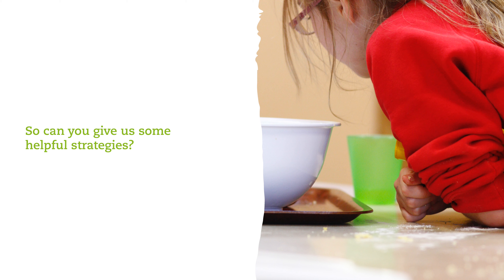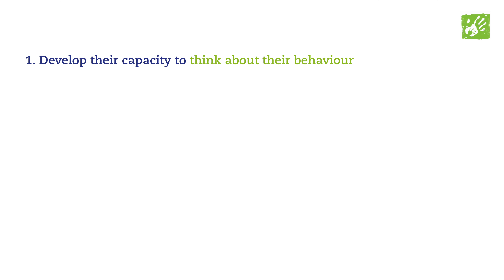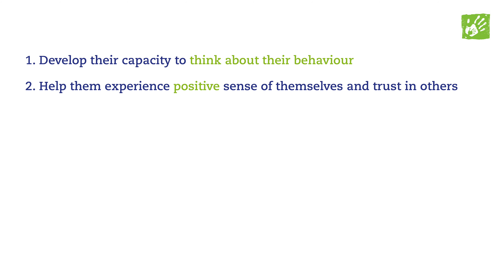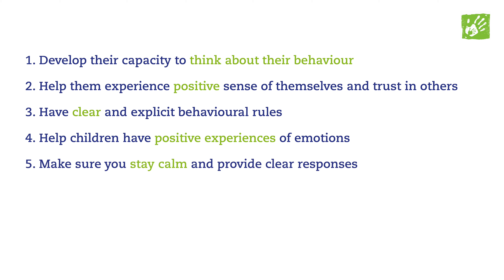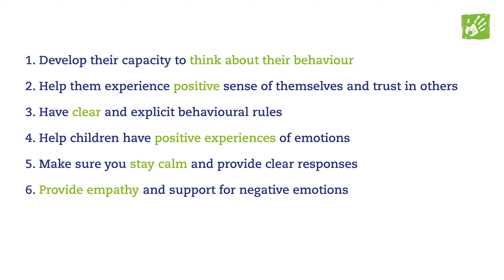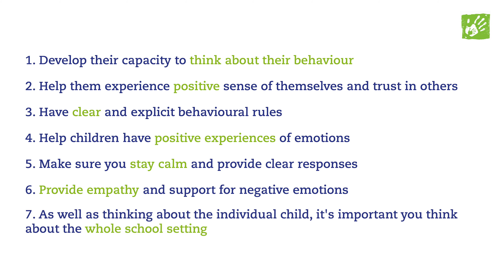So can you give us some helpful strategies? Try to help the child by developing their capacity to think about their behaviour and how others behave. Help them experience a positive sense of themselves and learn that they can trust in others. Have clear and explicit behavioural rules. Have a culture of empathy. Help children have positive experiences of emotions and to understand and manage these, even the more negative ones. Make sure as staff you stay calm and provide clear responses. Provide empathy and support for negative emotions — don't just be punitive. Show that you understand their reasons for negative emotions and find ways to help them manage these. As well as thinking about the individual child, it's also important to think about the whole school setting, which can provide the foundation for children feeling that school is a safe and secure place to be.